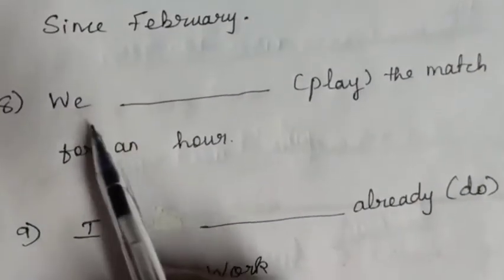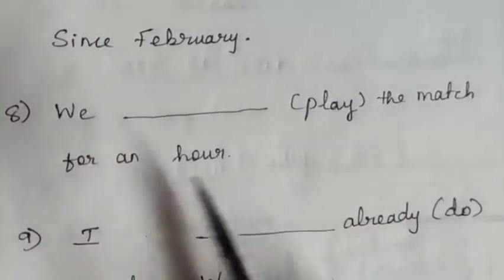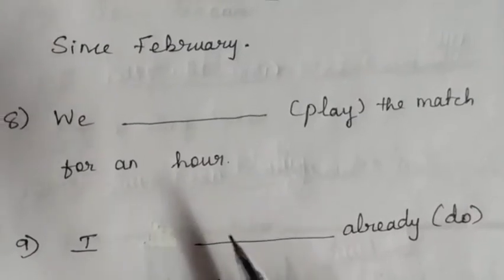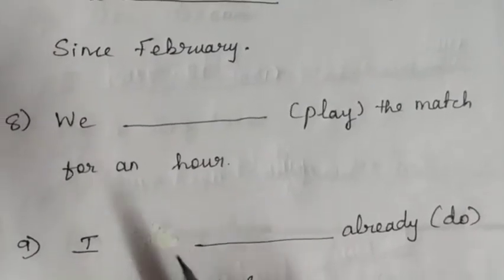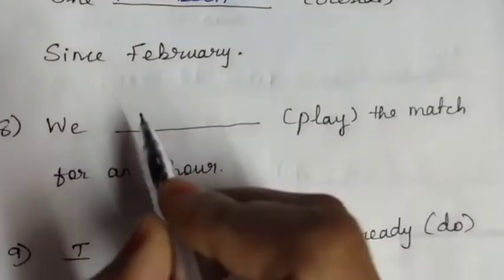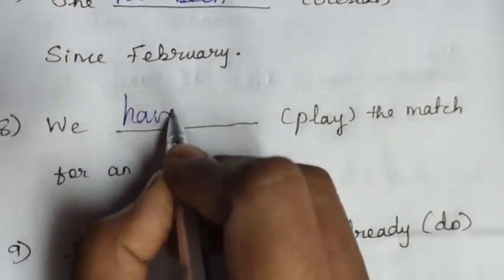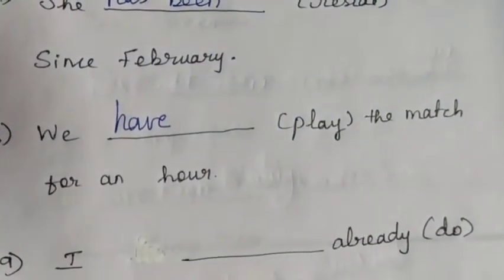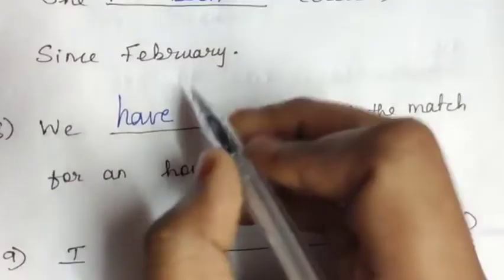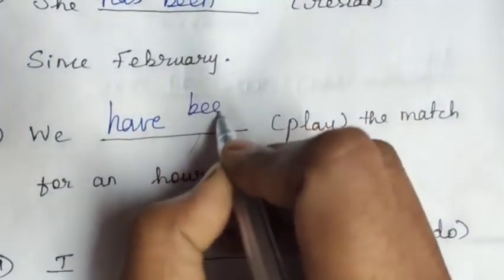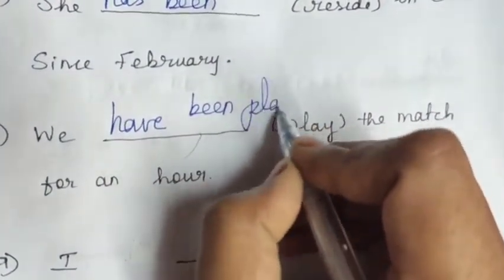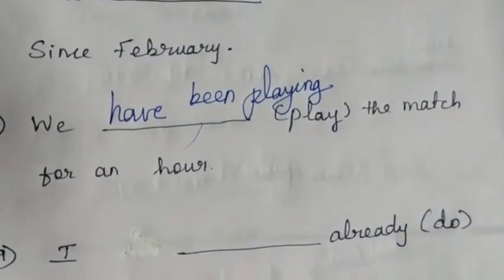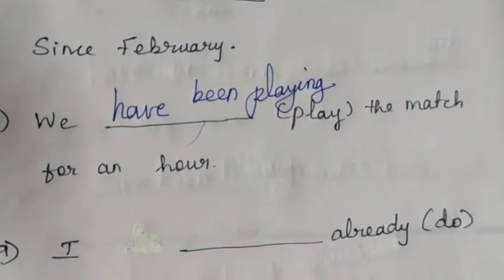Eighth: 'We dash play the match for an hour.' 'We' is plural. 'For an hour' is a period of time, so present perfect continuous tense. Answer: 'We have been playing the match for an hour.'